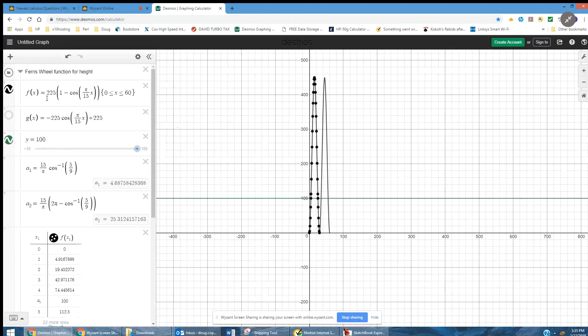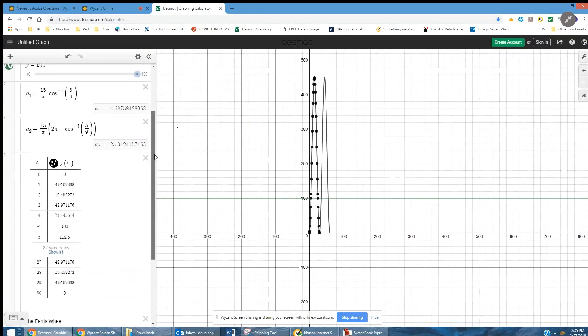Here is f(x). I could call it h(x) like we did on the whiteboard: 225 times (1 minus the cosine of π/15x). And then I created a table.